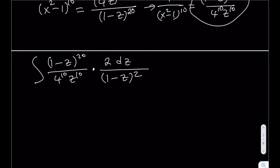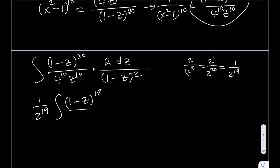Simplifying the constants: 2 divided by 4^10 = 2/2^20 = 1/2^19. The (1-z)^20 and (1-z)^2 cancel, leaving (1-z)^18. So our integral becomes (1/2^19) times the integral of (1-z)^18 / z^10 dz. We can evaluate this by expanding (1-z)^18 using the binomial theorem.